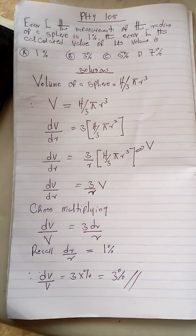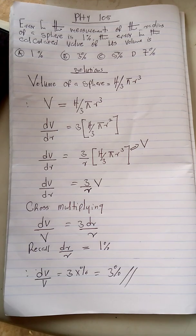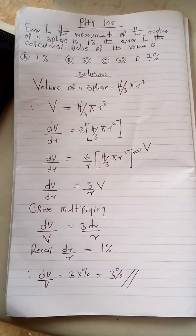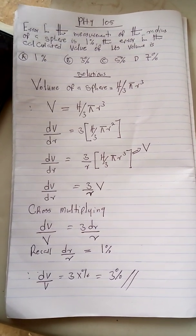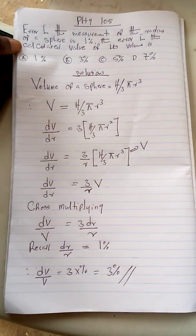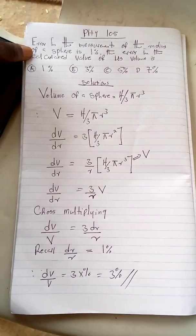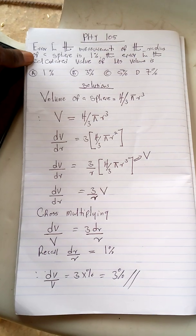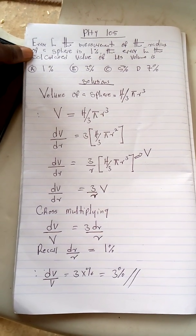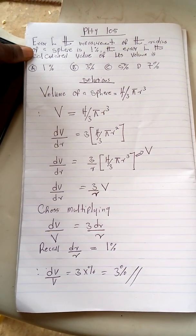Whenever you see questions on this, particularly when it is a sphere, just move to the last part and insert the value of your percentage there. If it is 2 percent that was given in the question, you just do 3 times 2 percent. If it is 4 percent, just do 3 times 4 percent and you get your answer.